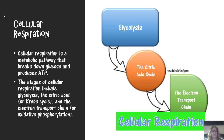The stages of cellular respiration include three stages: glycolysis, the citric acid cycle — otherwise known as the Krebs cycle — and the electron transport chain, otherwise known as oxidative phosphorylation.